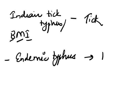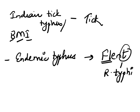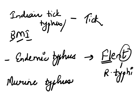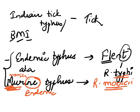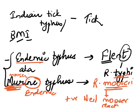A quick note: the causative agent for endemic typhus is Rickettsia typhi — remember FLINT, where the vector is flea and causative agent is Rickettsia typhi. Murine typhus is simply another name for endemic typhus. Murine is caused by Rickettsia museri — which is the same as Rickettsia typhi. Endemic typhus or murine typhus caused by Rickettsia museri gives a positive Neill-Muser reaction.